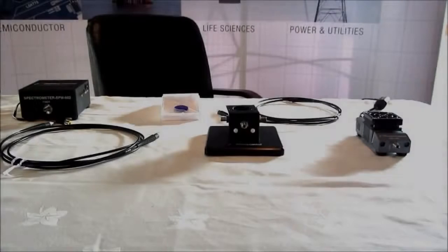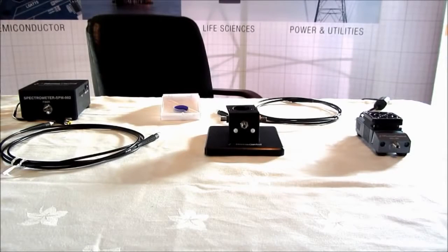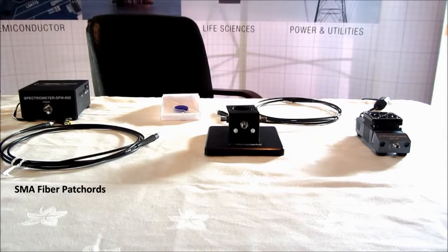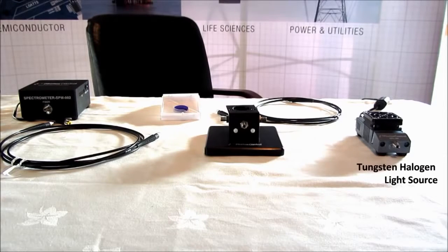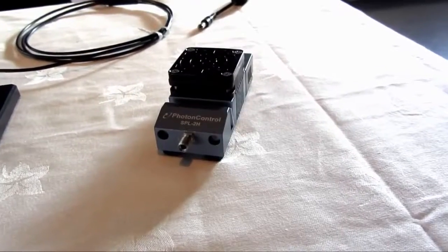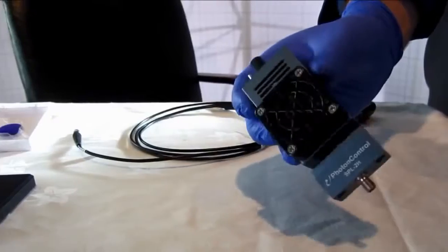What you will need for this application is the Photon Control SPM002 ET64, two SMA fiber patch ports for UV vis, cuvette holder, tungsten halogen SPL2H light source, and a color filter sample. Let's get started by taking a closer look at these products.